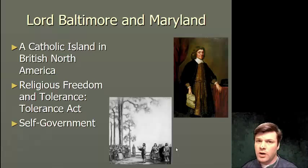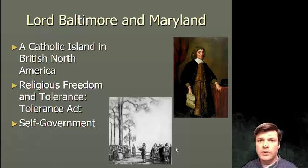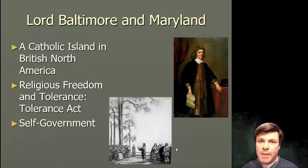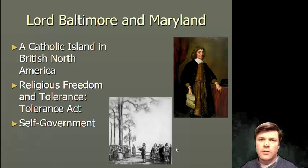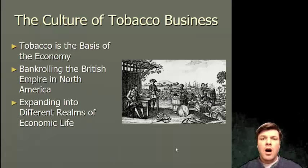Lord Baltimore envisioned Maryland as a safe haven, a refuge, a safe place for Catholics in Britain — where you could practice your religion openly and without any fear from interference from the state. If you think about American political thought, this ought to sound familiar: one of the elements of the First Amendment establishes the separation of church and state — that Congress will never make a law making one religion the official state religion. Maryland knocks this out pretty early. In 1648, the local self-representative government passes a law called the Tolerance Act, establishing religious toleration in Maryland.